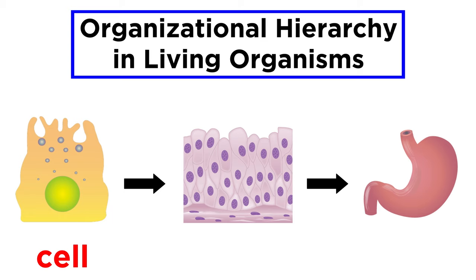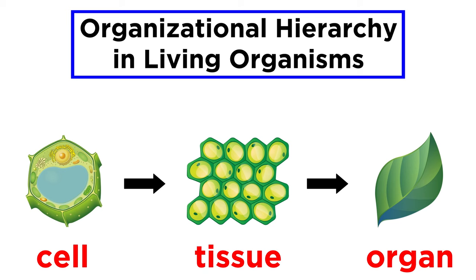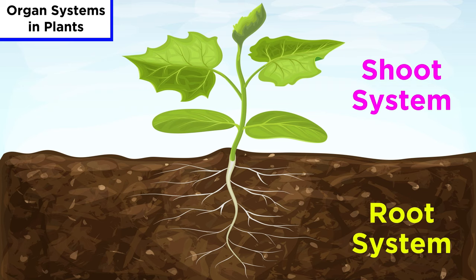As we learned in our study of human anatomy and physiology, life begins with cells, which can then organize into tissues, which can then assemble into organs and organ systems. And this organizational hierarchy applies to plants just as it does to humans.